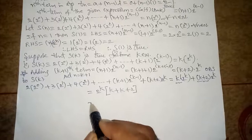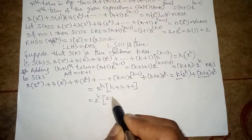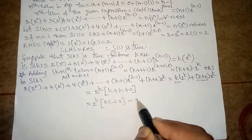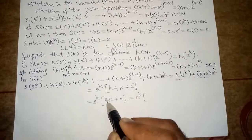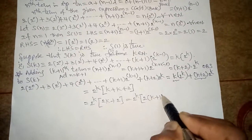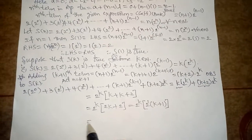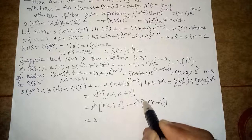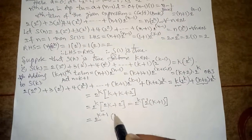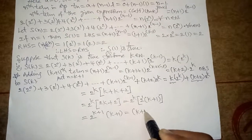So the RHS is 2 power k into (k plus k plus 2), which is 2 power k into (2k plus 2). We have 2 common, so 2 power k into 2 into (k plus 1). Since bases are same, powers are added: 2 power (k plus 1) into (k plus 1). This equals (k plus 1) into 2 power (k plus 1), which is the required result.